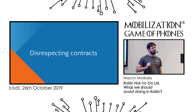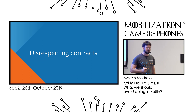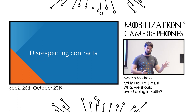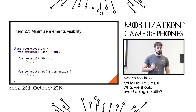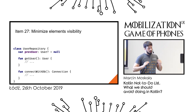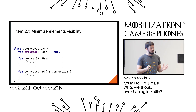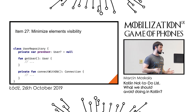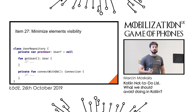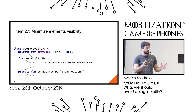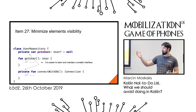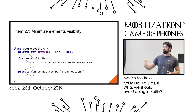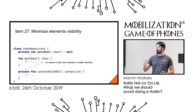The third and last big sin of Kotlin developers is disrespecting contracts. Starting with something that might sound obvious: when you have a class, it's generally better to minimize element visibility using modifiers like private. Public functions and properties need to be maintained, documented, and tested — we always need to consider how they're used from outside. We prefer to keep our API as small as possible. It's also easier to give people more visibility later than to take it away.